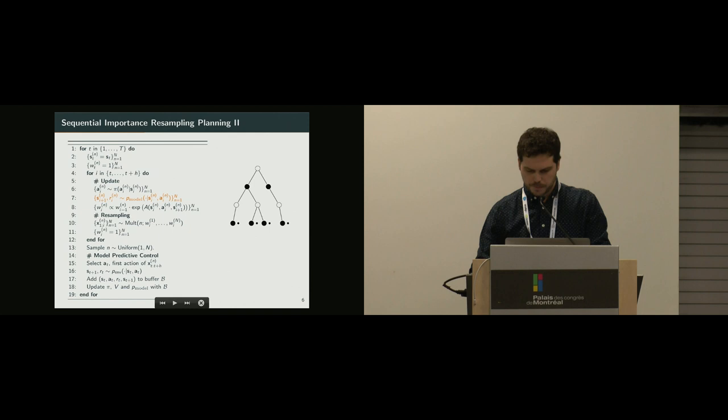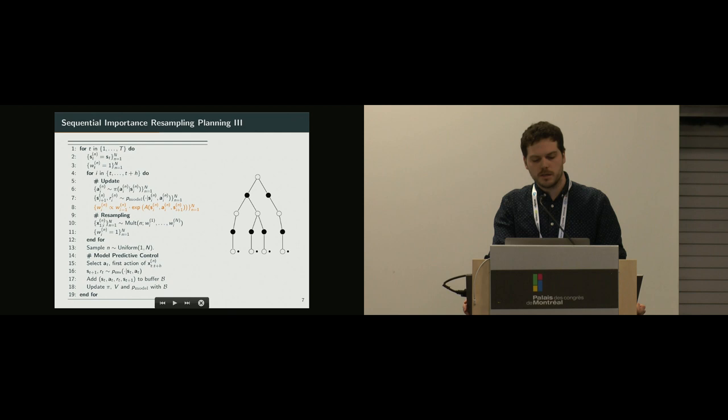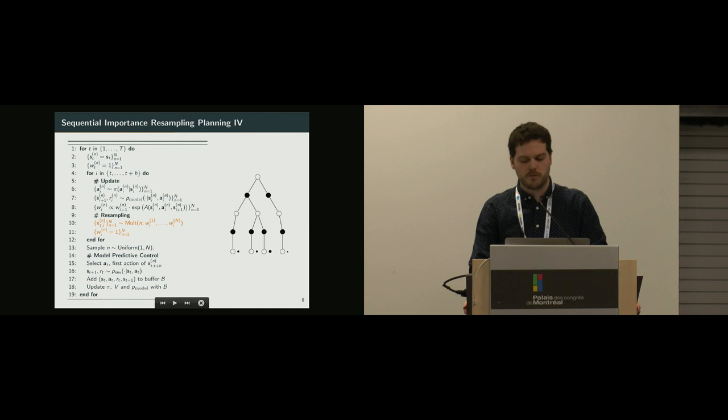Now I have four states. And now I'm going to compute the advantage function that I talked about, and I'm going to weight them. So now the third trajectory is a bit more promising than we first thought, and the fourth one is not as promising as we thought. So we're going to reallocate the computation accordingly.